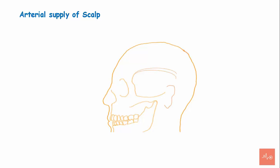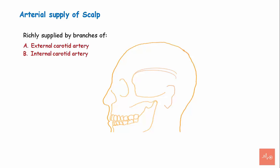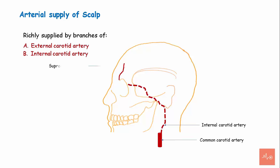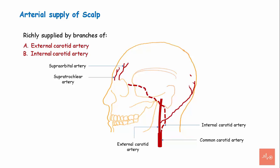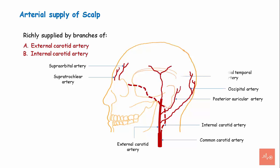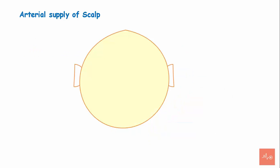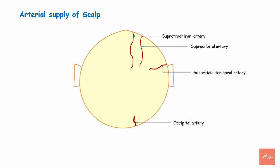The scalp has a rich blood supply from branches of both the external and internal carotid arteries. The internal carotid artery gives off the supraorbital and supratrochlear branches. The external carotid artery gives off the occipital artery, posterior auricular artery, and the superficial temporal artery. These five vessels anastomose with each other to provide profuse blood supply to the scalp.